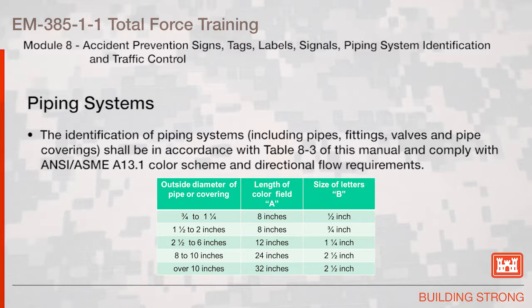The identification of piping systems including pipes, fittings, valves, and pipe coverings shall be in accordance with Table 8-3 of this manual and comply with the ANSI/ASME A13.1 color scheme and directional flow requirements. This table, which is organized by pipe diameter, indicates the length of the color field and the size of the lettering required.